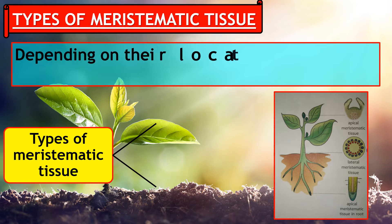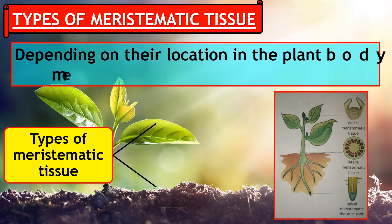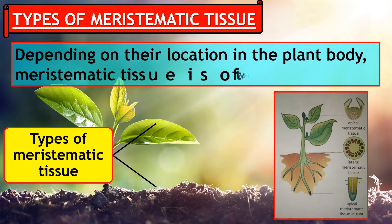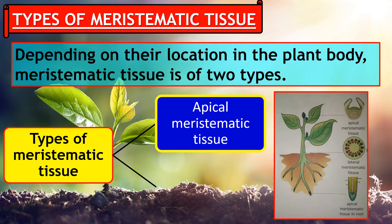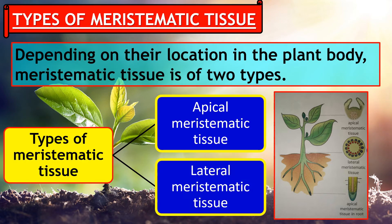Depending on their location in the plant body, meristematic tissue is of two types: apical meristematic tissue and lateral meristematic tissue, also known as cambium.